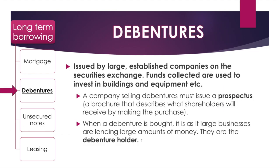Debentures are a bit more difficult to understand, but generally they are issued by large established companies — big businesses — and they usually issue them on the securities exchange. However, debentures can be issued by large private companies, in which case it would occur through private investment modes. Usually businesses use the funds collected through debentures to invest in buildings and equipment — non-current assets that the business will own.